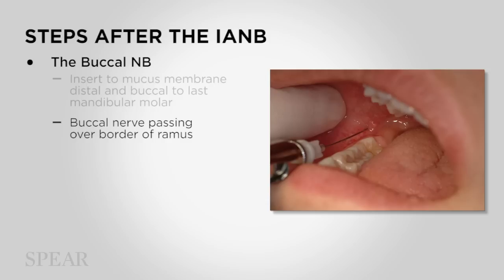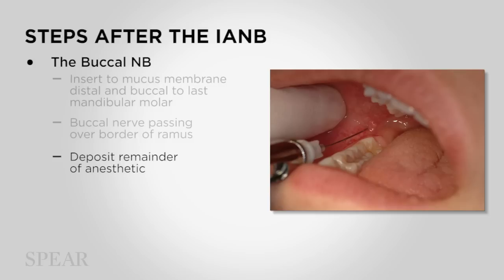This will give you soft tissue anesthesia anterior to that injection site down to the mental foramen. So in theory, giving the IA block and the buccal nerve block should give you profound anesthesia of the entire quadrant.